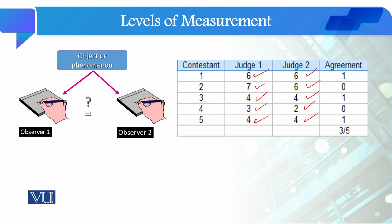In contestant 2, the judges don't have agreement, so we give it a 0. In contestant 3 there is again agreement, and in contestant 5 the judges again agree. So out of 5 contestants, we can say there is more than average agreement between the observers and judges. Therefore, the inter-rater reliability is comparatively high.